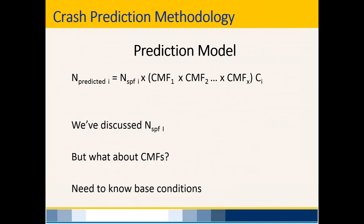Going back to the overall prediction model equation: we now have an overview of SPFs, which lets us calculate the N SPF variable. But what about CMFs? Recall that you need to apply a CMF for any elements of your project roadway that differ from the base conditions used to build the SPF. If you're using an SPF from the Highway Safety Manual, the manual lists the base conditions used to develop each SPF.